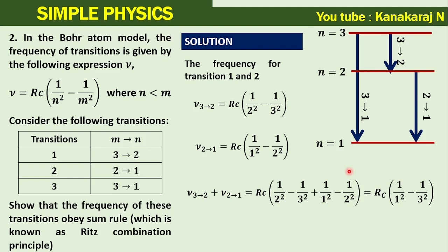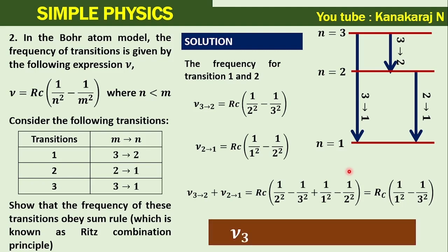times (1/1² - 1/3²). So the right hand side equals the frequency of transition 3 to 1. Thank you.